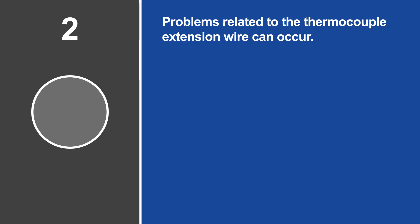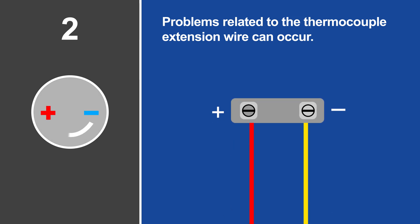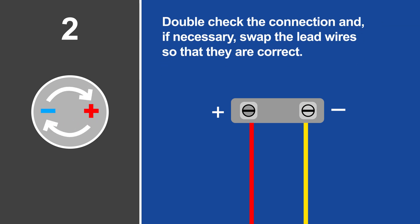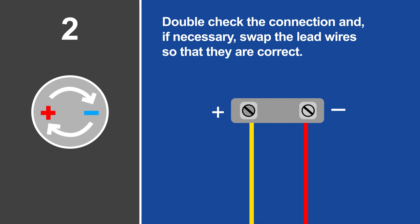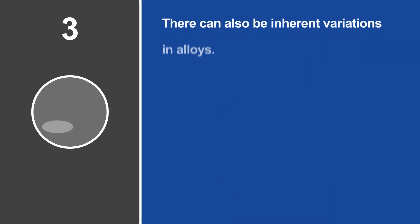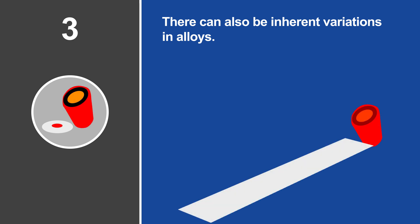Problems related to the thermocouple extension wire can occur. If the polarity of the thermocouple lead wires is reversed, the measured temperature will also be incorrect. The solution is to double-check the connection, and if necessary, swap the thermocouple lead wires so that they are correct. There can also be inherent variations in alloys.